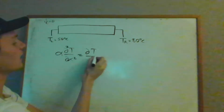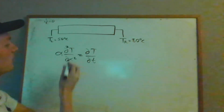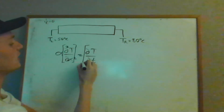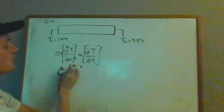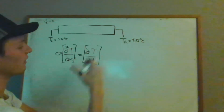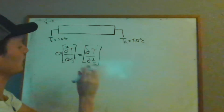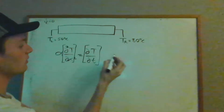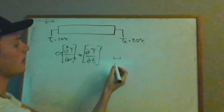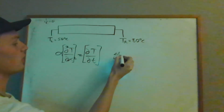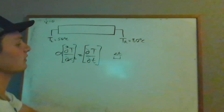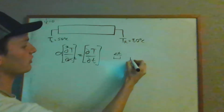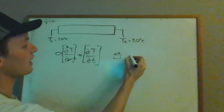What we need to do next is approximate these derivatives. That means we need to make small changes in time — we need to look at how the temperature changes when we move forward in time a small amount, delta T, which will be our time step. Similarly, we'll do the same thing with respect to position, delta x. This will be a little more involved because we're taking the second partial derivative with respect to position.